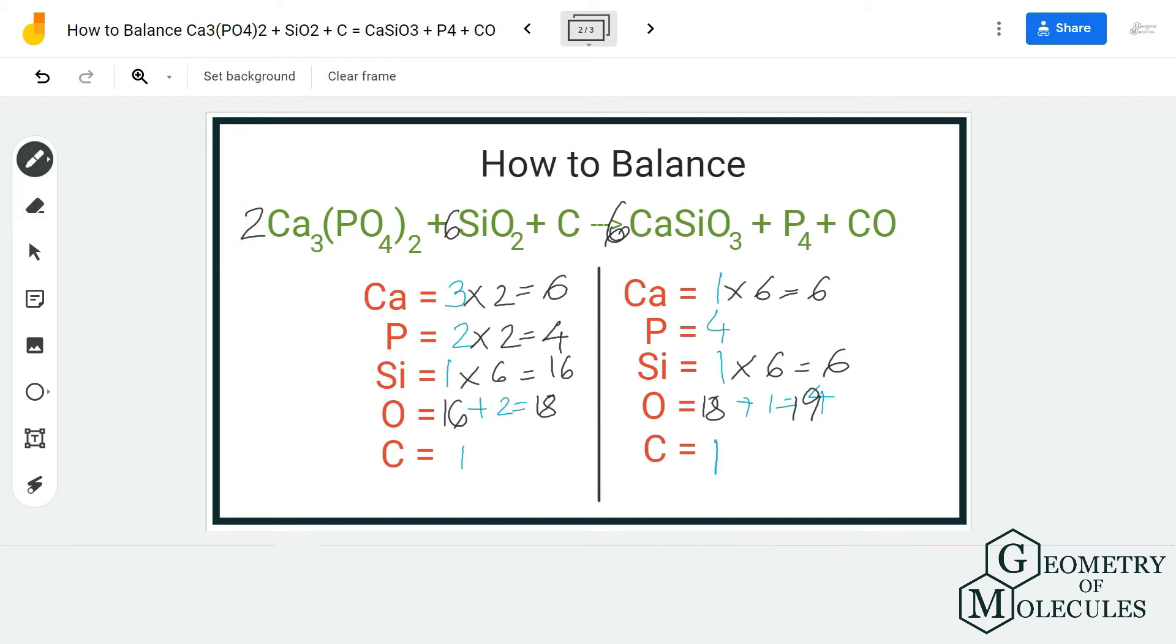So for fixing this, you can put a coefficient 10 before carbon monoxide because it will help us to get 28 oxygen atoms on the product side. Do that, and now to balance it off...